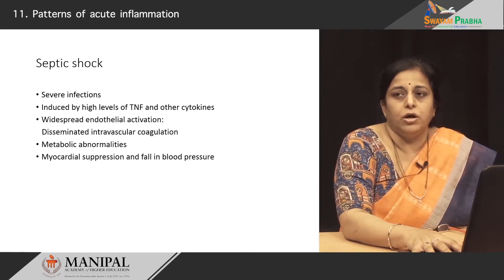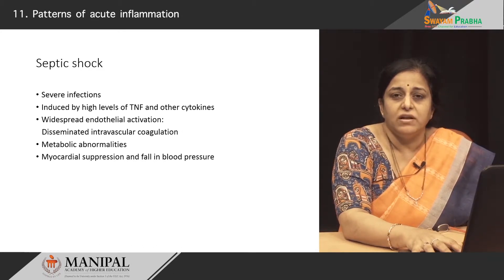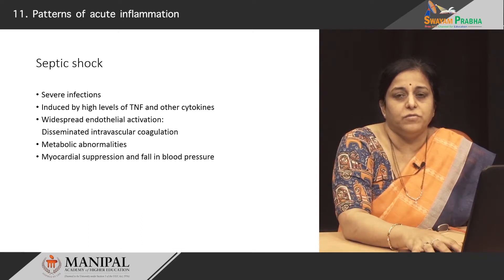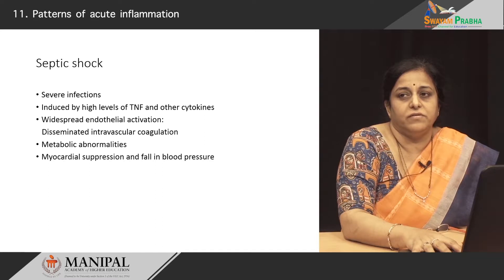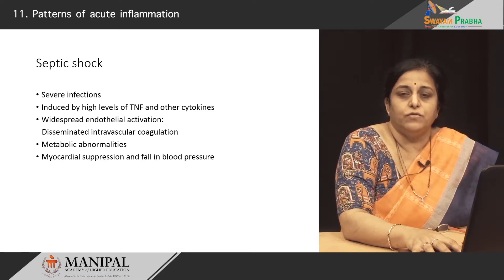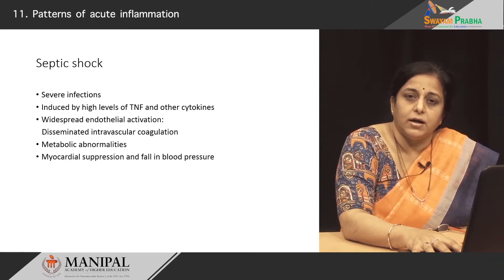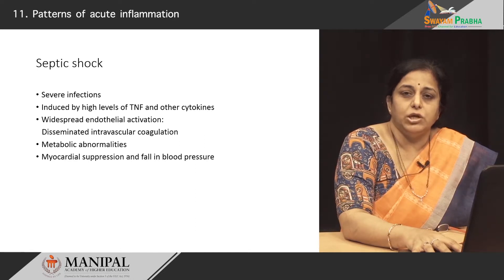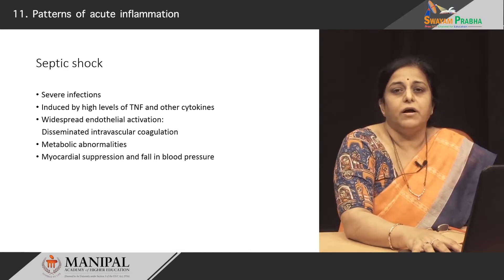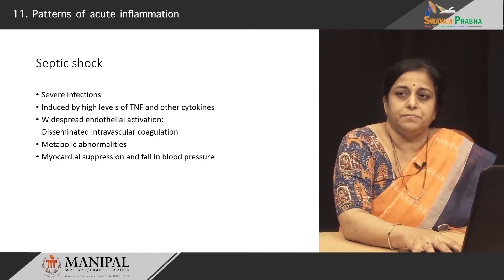In severe infections called septic shock, the high levels of tumor necrosis factor and interleukins — which play a very important role mediating various reactions in inflammation — when produced in very high amounts in severe infections, can have pathological effects. The pathological effects of cytokines include widespread endothelial activation, which leads to platelet aggregation and thrombosis. Disseminated intravascular coagulation can occur as a complication of infection due to massive release of cytokines. In addition, there are metabolic abnormalities like insulin resistance, and these interleukins and TNF can suppress the myocardium, resulting in a fall in blood pressure.